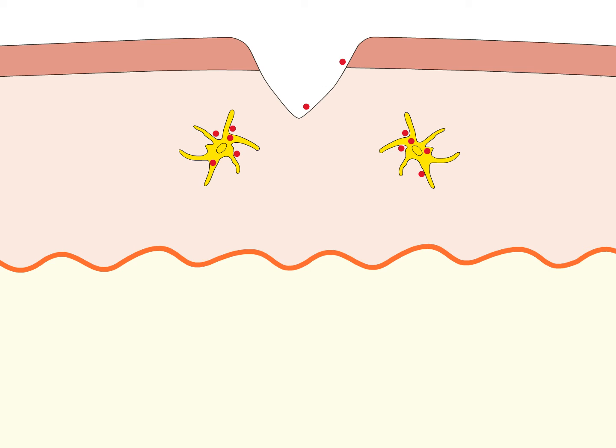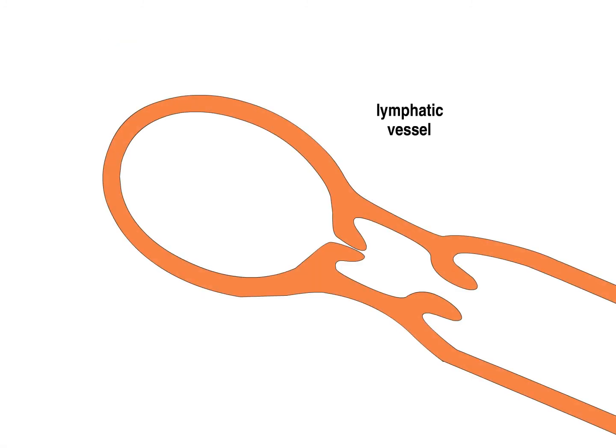When these receptors bind pathogens, they activate the dendritic cells, which then start to mature. In this process, they migrate from the tissues and change their behavior to stop phagocytosis and to start expressing immune-stimulatory molecules.